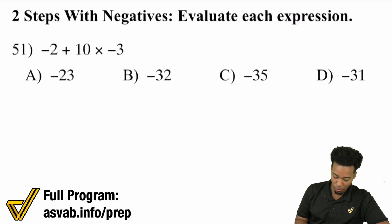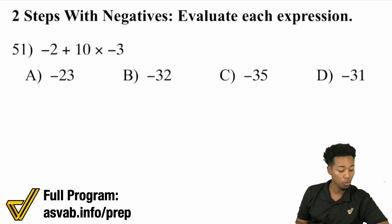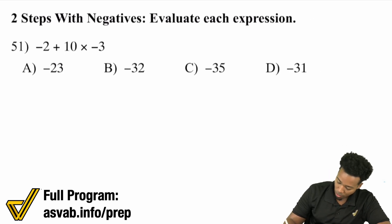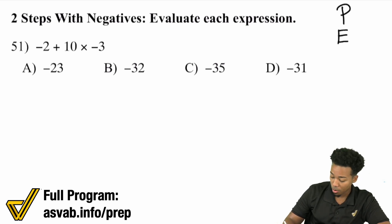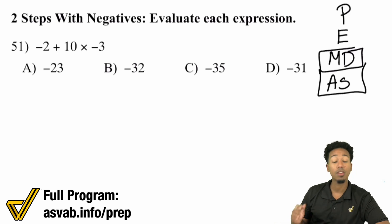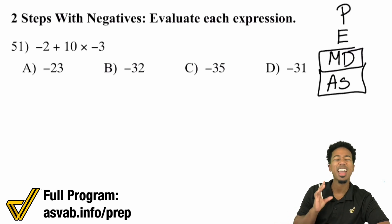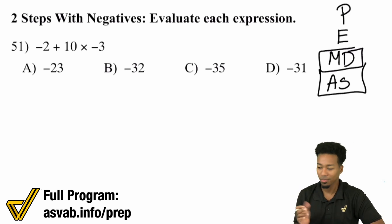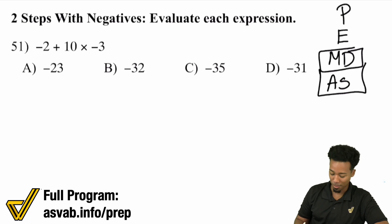So we have negative 2 plus 10 times negative 3. Remember, we need to think about the order of operations as PEMDAS — Please Excuse My Dear Aunt Sally. When it comes to the order of operations, we have parentheses, we have exponents, but remember that multiplication and division are the same operation — whichever comes first. Then addition and subtraction, again whichever comes first. So if you see division then multiplication, you need to do the division first.